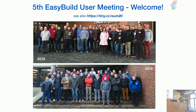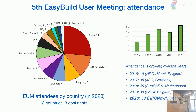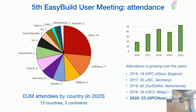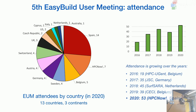We've had four EasyBuild user meetings before. We forgot to take pictures at the first two, so we only have 2018 and 2019. In terms of attendance it's growing significantly — 53 here today in Barcelona, plus a couple who registered late. There's a big mix of people from all over Europe, including local attendance from Spain and HPC Now, two people from the US, someone from Cyprus, and other non-European countries. That's 30 different countries.